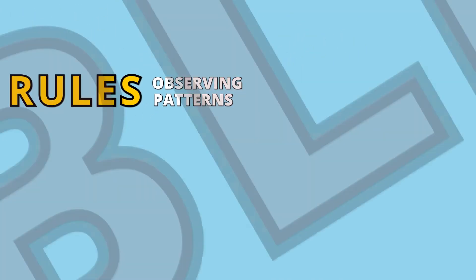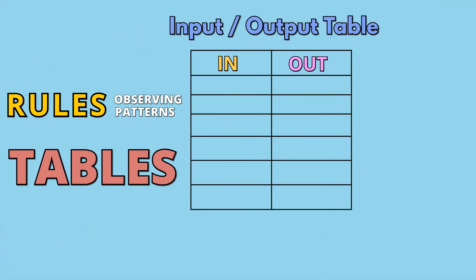Did you know that we can find rules by observing patterns and tables? In this video we'll be learning how to find a rule and any missing number in an input and output table.